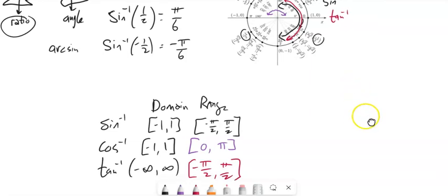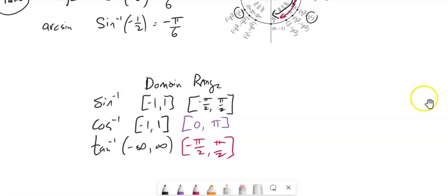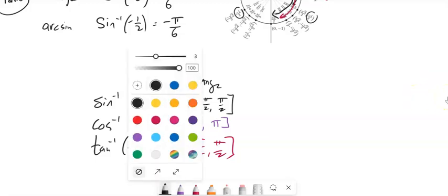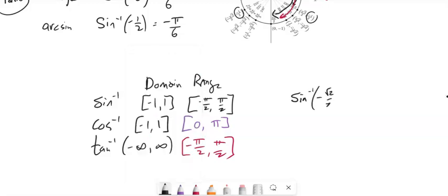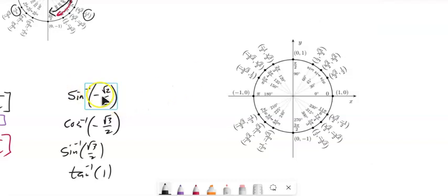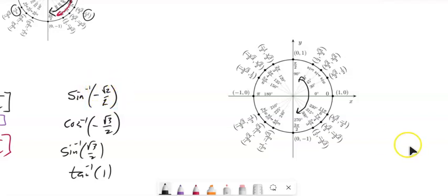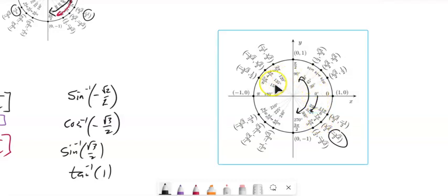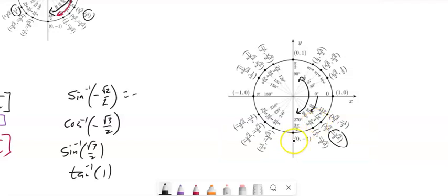Now let's evaluate some of these using the unit circle. Arc sine of negative √2/2: arc sine outputs are in quadrants 1 and 4. Sine is the y-value, so we want the y-value to be negative √2/2. That happens here — but notice the rotation is not 7π/4 going one way; it's rotating the other way, so it's negative π/4.